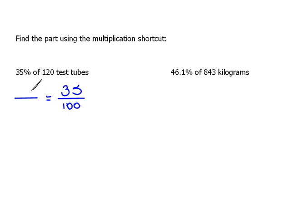Over on the left is our part of the whole. Or, we can also think about it as the is and the of. If we're looking for 35% of 120 test tubes, 120 test tubes, that's our entire amount. We're looking for a portion of that. So our 120 is our whole. We're going to write an X for our unknown amount here.